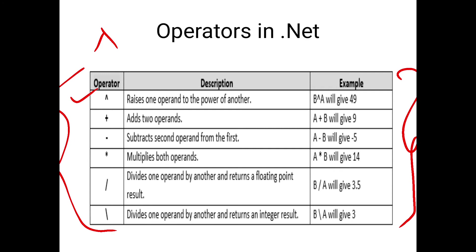For the multiply operation, it multiplies both operands. A multiplied by B, which is 7 multiplied by 2, gives us 14. The next arithmetic operator is division, which divides one operand by another — B divided by A, which is 7 divided by 2, gives us 3.5. There is also integer division, which divides one operand by another and returns an integer result with no floating point values. So B divided by A is 7 divided by 2, but the answer is not 3.5; the fraction part is removed and the answer is 3.